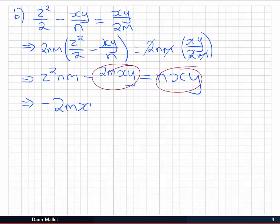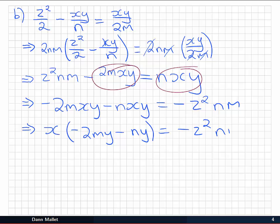So we have minus 2mxy, subtracting nxy from both sides gives us minus nxy on the left, and subtracting z squared nm from both sides leaves us with z squared nm with a negative on the right hand side. Now we can see that we've got the x's in both the terms on the left. I'm going to factor them out. And I'm left with minus 2my minus ny, and the same right hand side. Next, to isolate x, I need to divide both sides by the factor in parentheses.